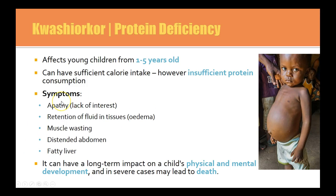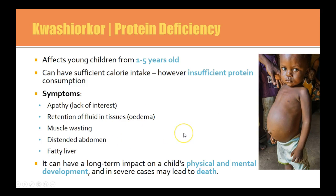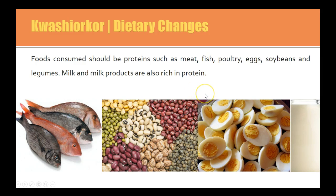Symptoms of kwashiorkor include apathy, retention of fluids (oedema) — which is what the child in the image is suffering from — muscle wasting because there's no protein to make muscles, distended abdomen, and fatty liver. Long-term kwashiorkor in a child can impact physical and mental development, and in severe cases can lead to death. Dietary changes include fish, legumes, eggs, milk and milk products, which are rich sources of protein. Some children may be lactose intolerant, so dairy-free protein sources or lactase enzyme supplements may be needed.